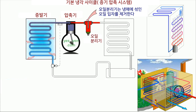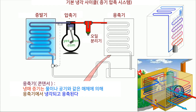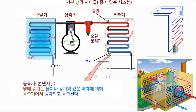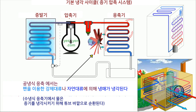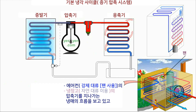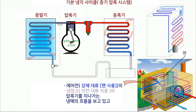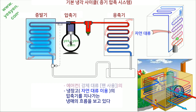Suspended oil particles are removed from the refrigerant in the oil separator. Condenser: Refrigerant vapor is cooled and condensed in the condenser by a cooling medium like water or air. In air-cooled condensers, the refrigerant is cooled by forced convection using fans, or by natural convection. In water-cooled condensers, water is circulated outside the tubes to cool the vapor. The flow path across the condenser in the air conditioner using forced convection and in the refrigerator using natural convection is depicted.